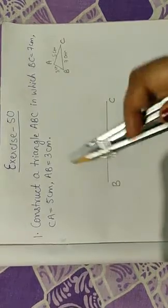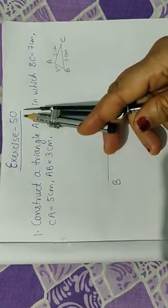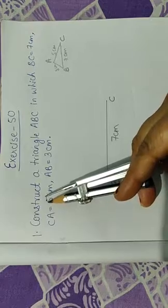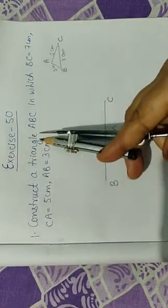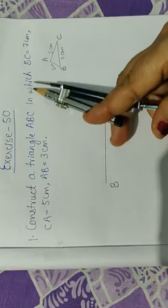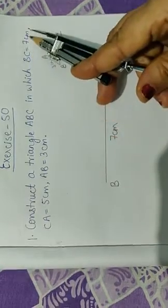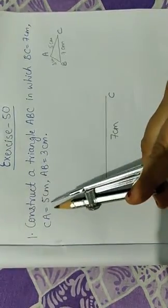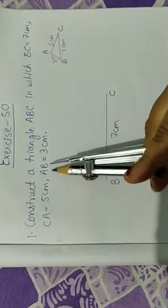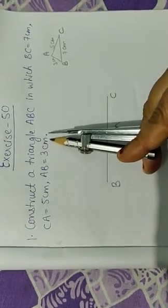I have taken a question from exercise 50. The first question is construct a triangle ABC in which BC is 7 centimeter, CA is 5 centimeter, and AB is 3 centimeter.